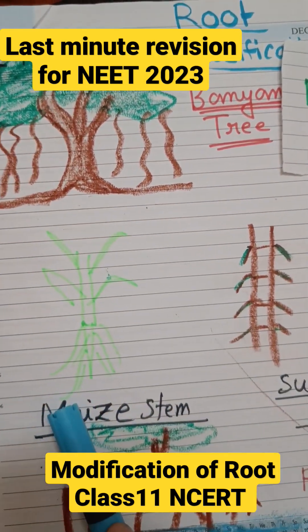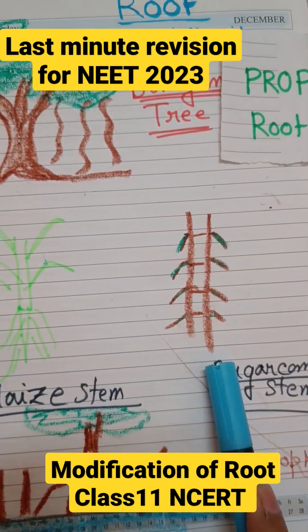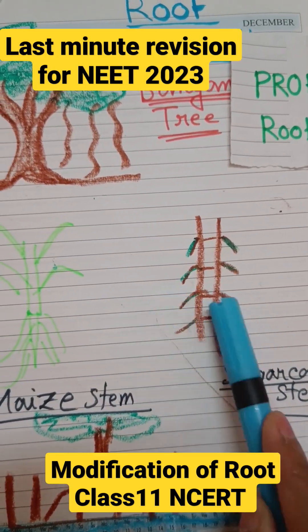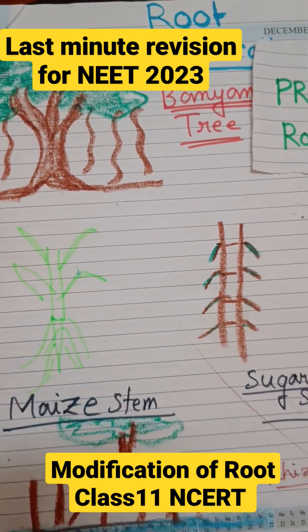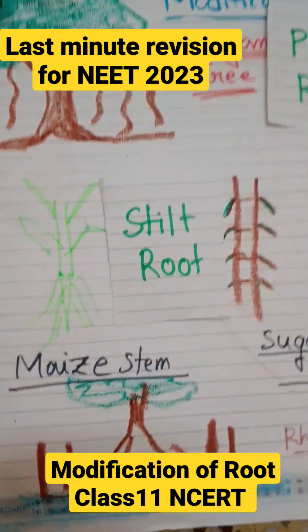Next is the stem of maize and the stem of sugarcane, where you can see some roots coming out. These roots are called stilt roots.